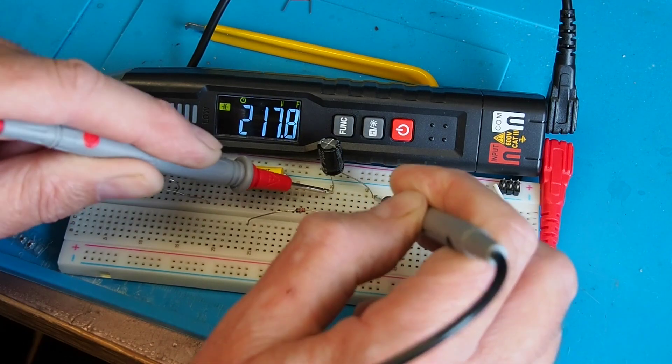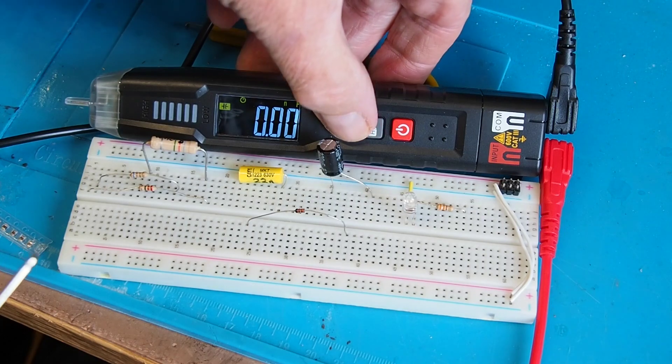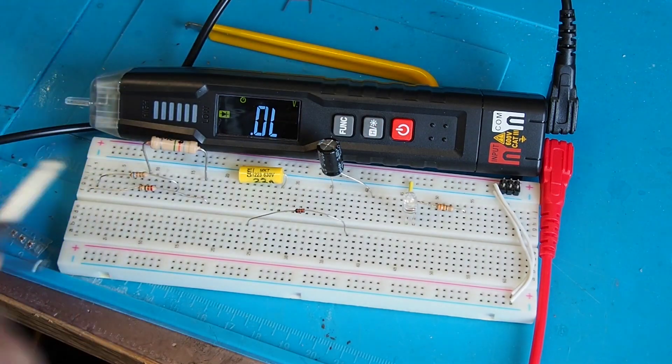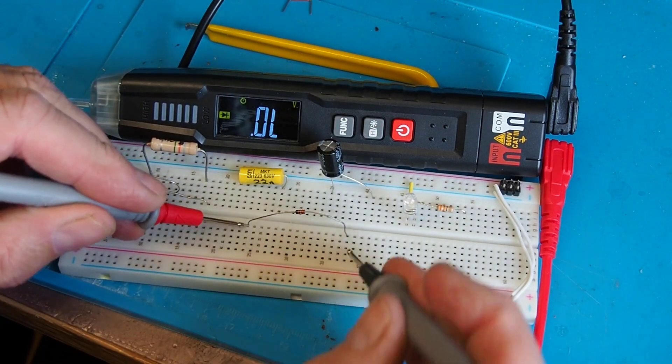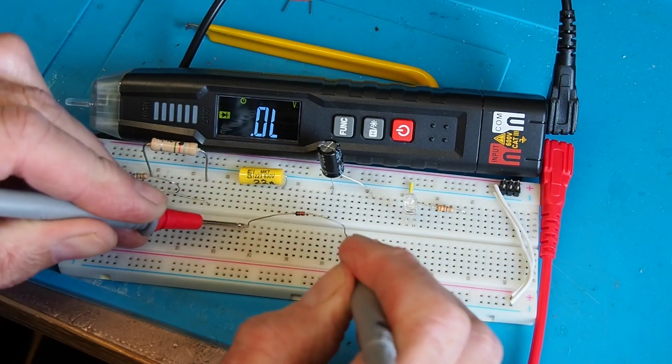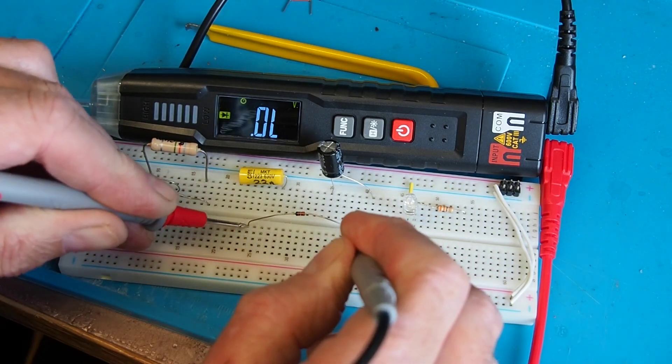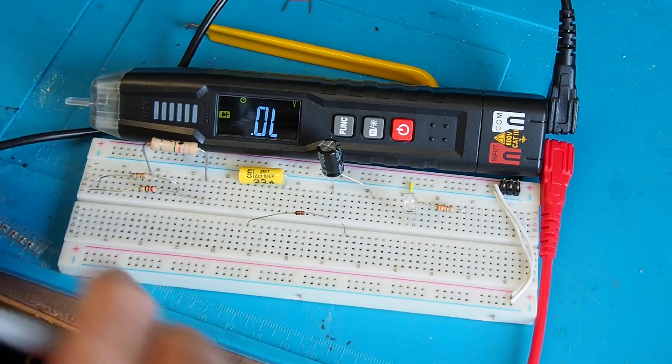If we press function again we get to diode test. I've got a small signal diode here. It's reading zero that way which should be reverse bias, so if I swap the probes around we should now get the forward bias voltage.